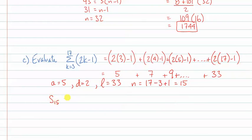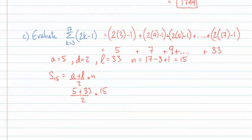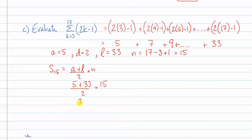The sum of 15 terms, let's use the a plus l over 2 times n. So 5, 33, divide 2, multiply by 15 terms, and that's going to be 38 over 2 times 15, or 19 times 15. Let's get the calculator and find out what 19 times 15 is. It's 285. And there you go. There's several examples to help you out. Good luck with the lesson.